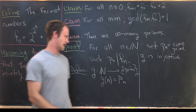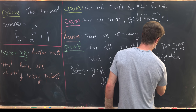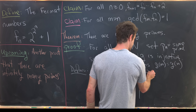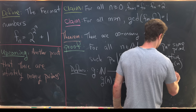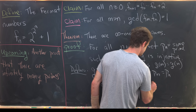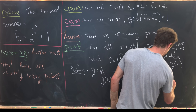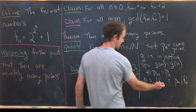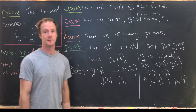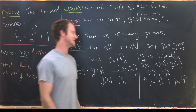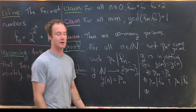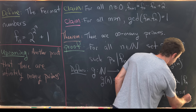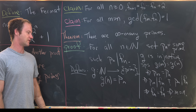Suppose g of m equals g of n; then p sub m equals p sub n. That means p sub m divides both F sub m and F sub n, giving a prime that is a common divisor of F sub m and F sub n. But their gcd equals 1, so this is impossible unless m equals n. Therefore F sub m equals F sub n implies m equals n, which is exactly what we need for injectivity.